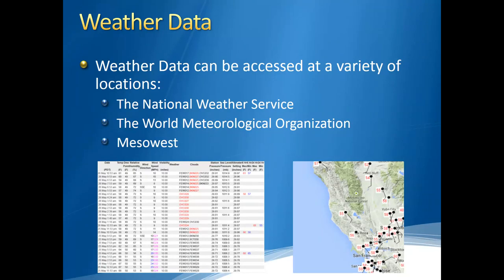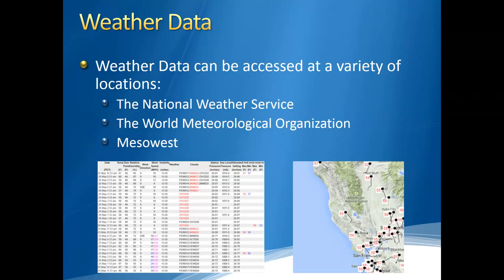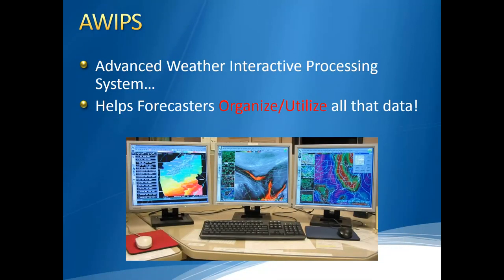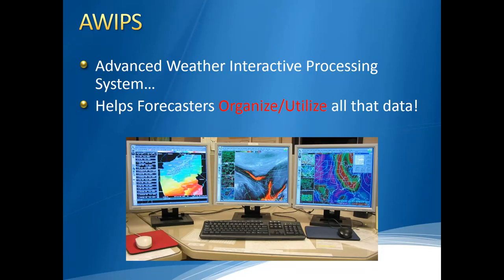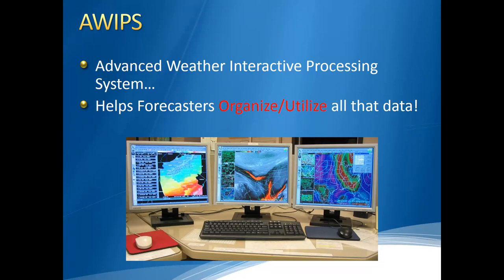Sometimes we're going to have information overload, so there are tools to not just view raw numbers but also plot and interpret them. Many of these tools are available on a system called the Advanced Weather Interactive Processing System, also known as AWIPS. AWIPS allows meteorologists to organize and utilize all of that data, and also allows them to look at forecasts and analyze each one of those forecasts — which becomes an important step later on.